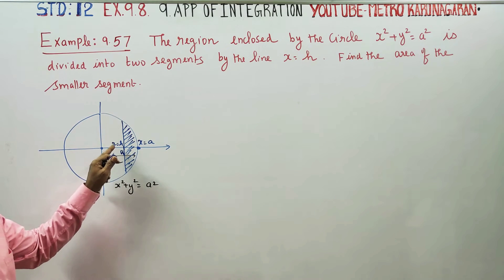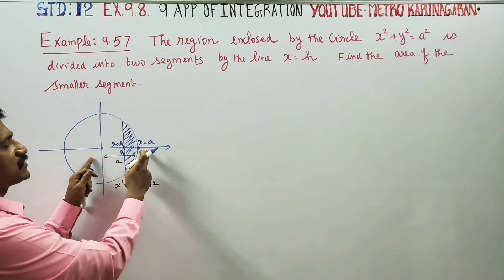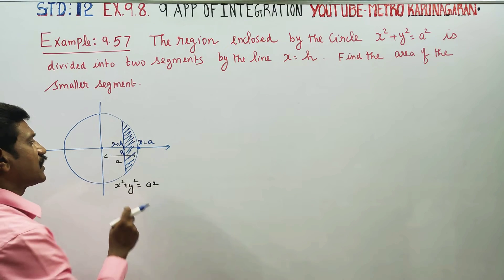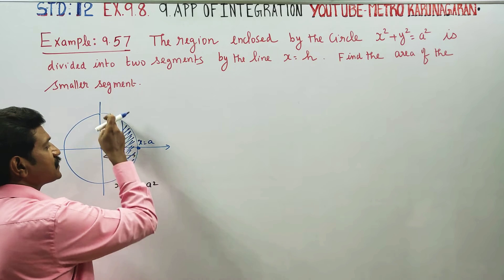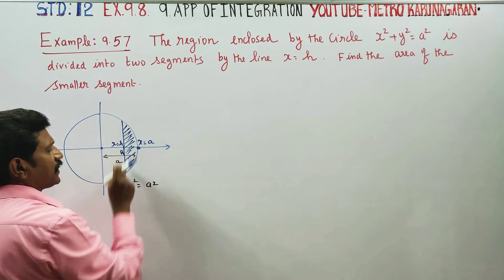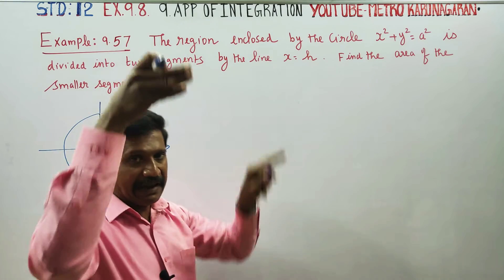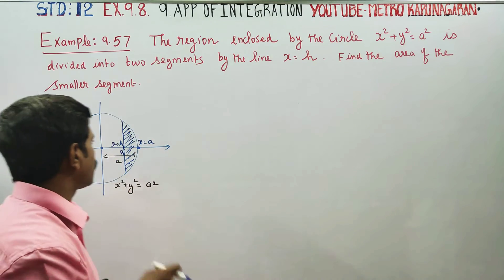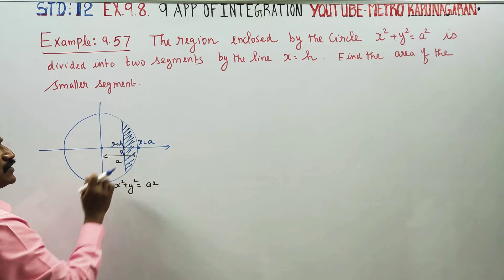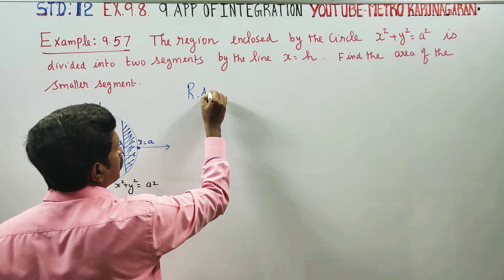x = h. For example, radius is 5. x = 3, x = 2, x = 1 — these are values of x = h. This is the small segment. x = h is the second segment.